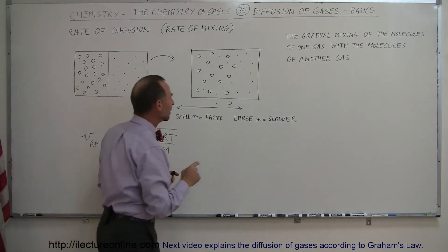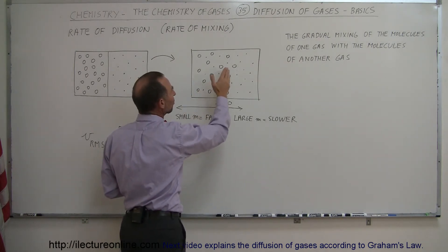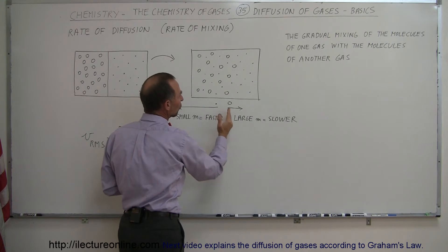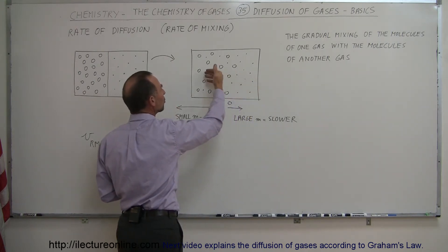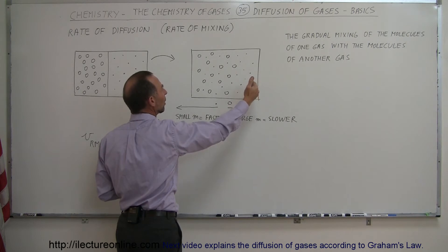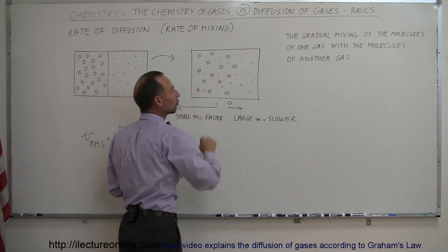What we find is that the larger molecules move across to the other side and mix much more slowly, while the small molecules seem to move through much more quickly. So smaller molecules tend to mix with another gas much more quickly than large molecules mix.